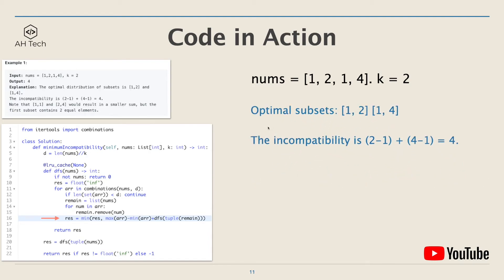For this example, the optimal subsets are [1, 2] and [1, 4]. The minimum incompatibility is (2 - 1) + (4 - 1), which is 4. This concludes the algorithm.